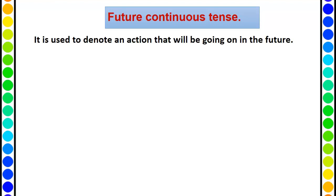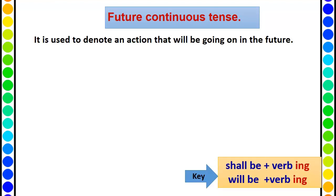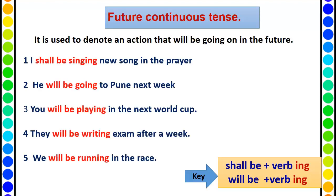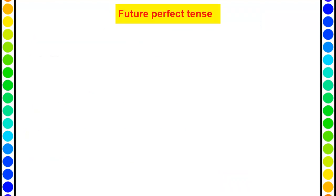Now future continuous tense. Continuous means to put 'ing'. It is used to denote an action that will be going on in the future — your prediction or guess that work will continue in the future. Keywords: 'shall be'/'will be' plus the present participle, that is verb plus 'ing'. Examples: I shall be singing new songs in the prayer. He will be going to Pune next week. He will be playing in the next world cup. They will be writing exam after a week. We will be running in the race. Many times 'will' is also used for some supposition or prediction when we may not be sure.